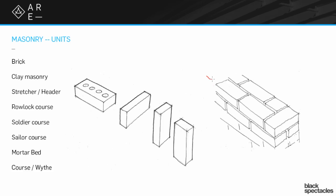Each one of these lines is one wythe. In order to make them work together, you would occasionally have one of the bricks go from one wythe to the other — across — and that would tie the bricks together. If you're looking at a brick and the face is being exposed, that's referred to as a stretcher. If it's facing across, reaching all the way from one wythe to the other, that would be referred to as the header. So: the stretcher and the header.